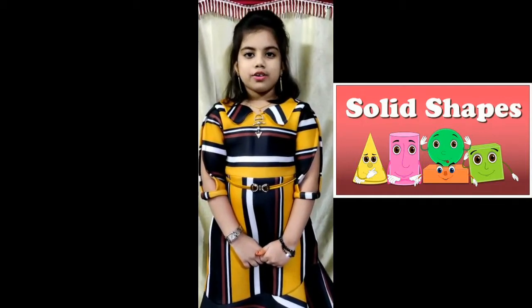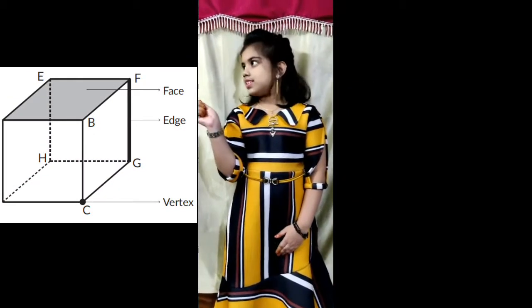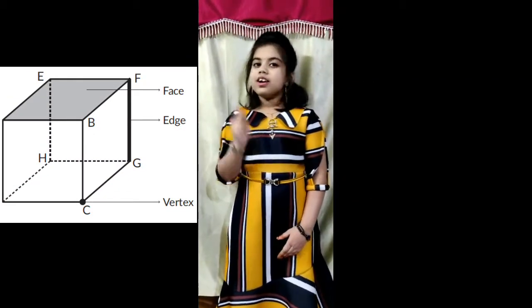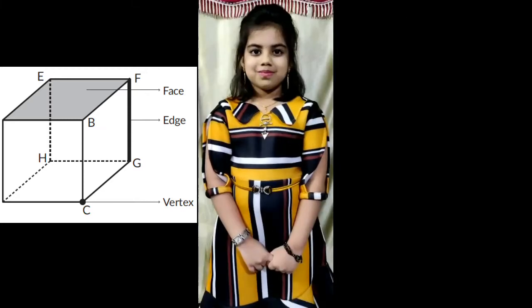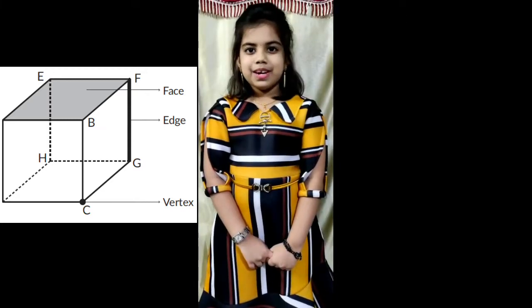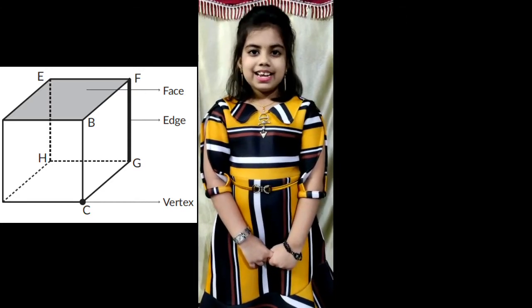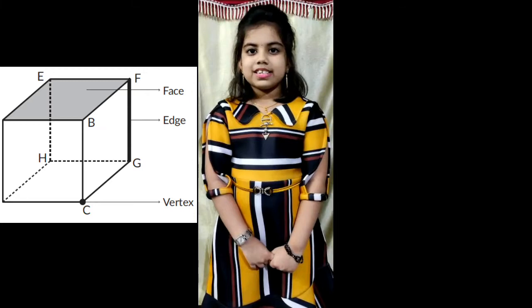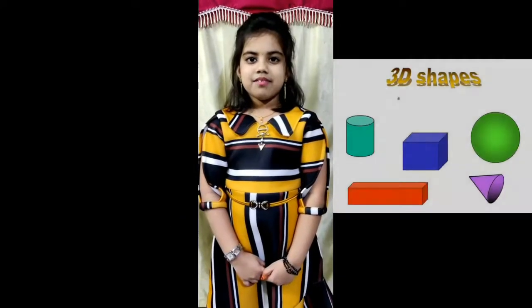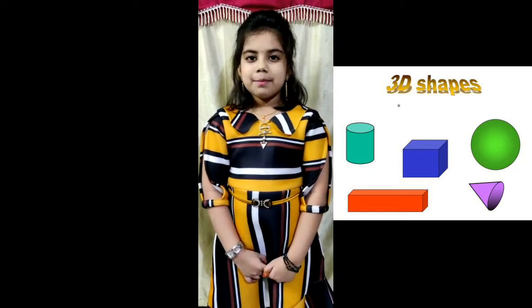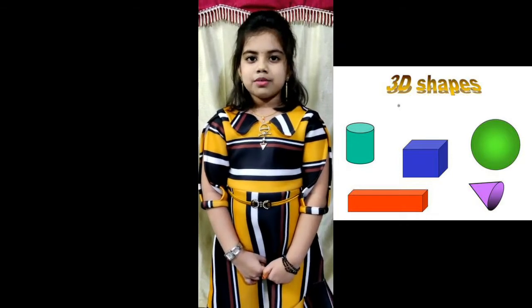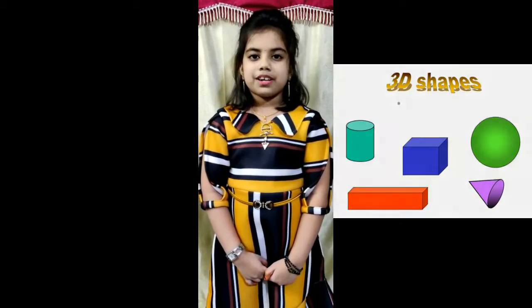Objects that occupy space are called solid shapes. Their surfaces are called faces. Faces meet at edges, and edges meet at vertices, which are nothing but corners. Now I will tell you about some examples of solid shapes and their properties.